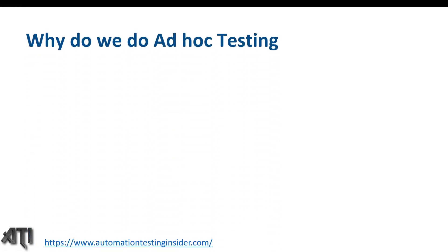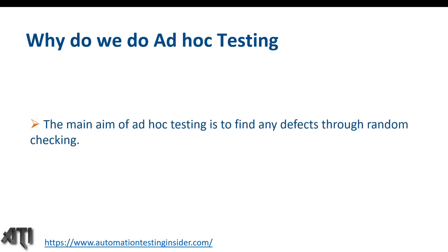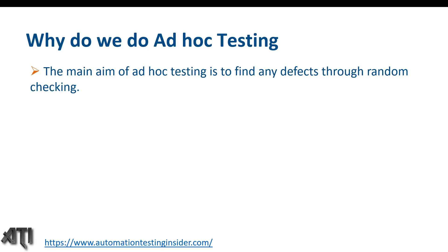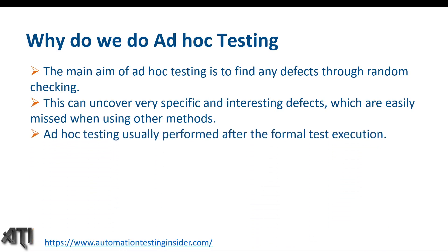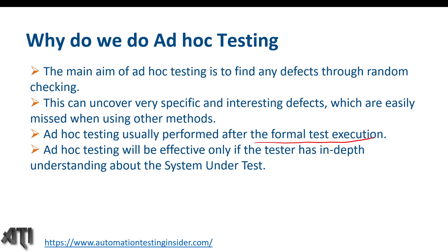The main aim of ad hoc testing is to find any defects through random checking — we randomly verify the application and try to find defects. This can uncover very specific and interesting defects which are easily missed when using formal testing approaches. Ad hoc testing is usually performed after the formal test execution, and it will be effective only if the tester has an in-depth understanding about the system under test.